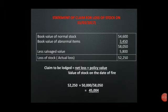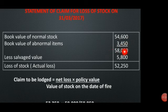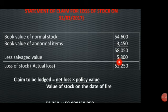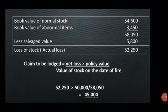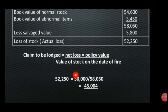Let's take the statement of claim for loss of stock. The normal stock is 84 and the closing stock is 84 — the same figure. Let's take the statement of actual loss. The formula is: net loss into policy value divided by value of stock at the date of fire. The net loss is 82,250 into policy value divided by total stock at the date of fire.